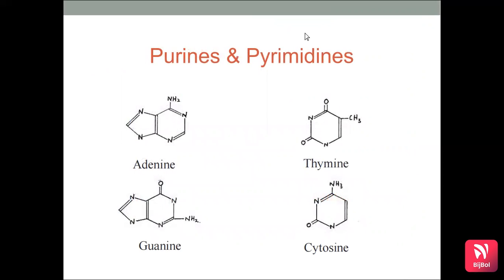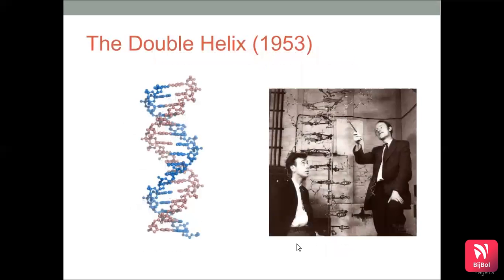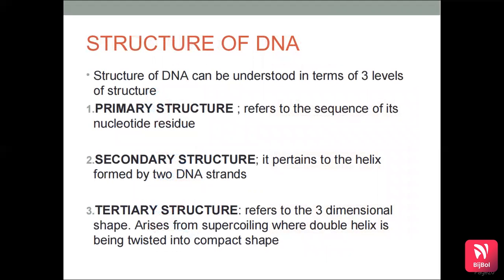Purines in DNA are adenine and guanine; pyrimidines are thymine and cytosine. DNA has a double helical structure, and this double helix model was discovered in 1953. The structure of DNA can be understood in terms of three levels: primary structure refers to the sequence of nucleotide residues; secondary structure pertains to the helix formed by the two DNA strands; and tertiary structure refers to the three-dimensional shape arising from supercoiling, where the double helix is twisted into a compact shape.